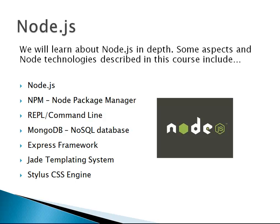We'll integrate MongoDB, which is a NoSQL schema-less database. We'll dedicate an entire chapter to the Express Framework, which gives us an easy way to route HTTP requests to certain models and controllers, and basically build an entire application with just Express and Node itself. We'll learn about some templating systems — the Jade templating system and the EJS templating system.